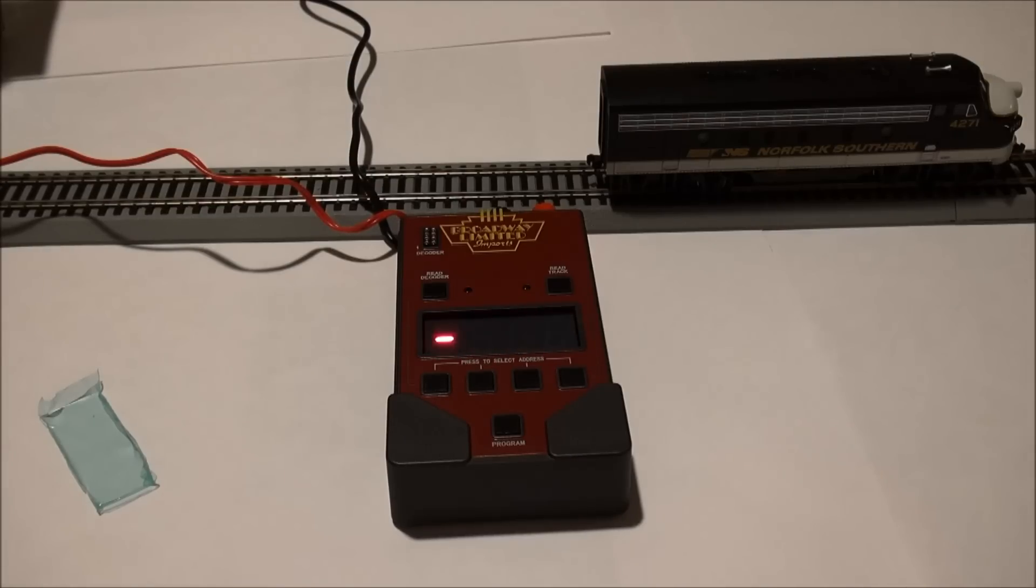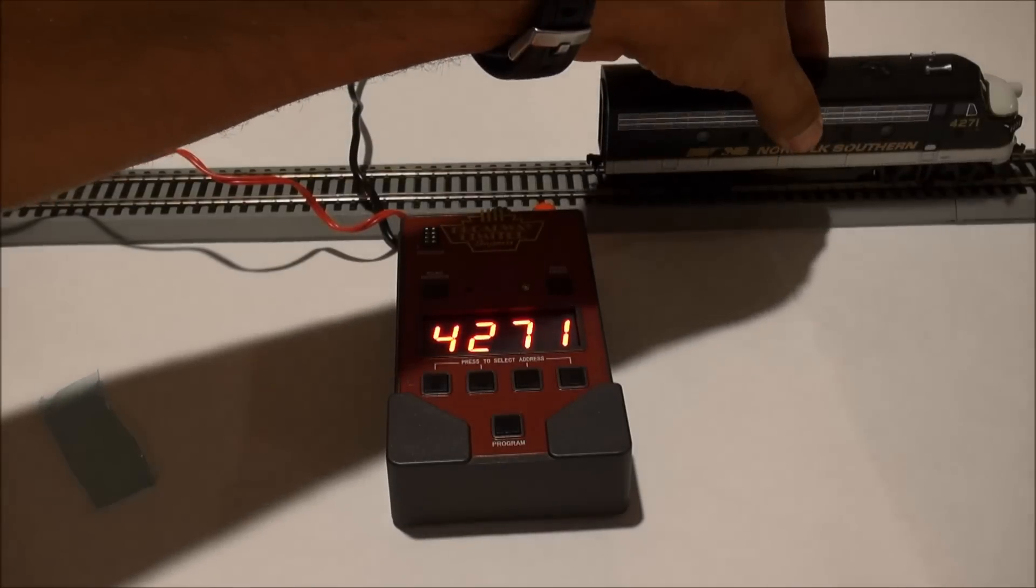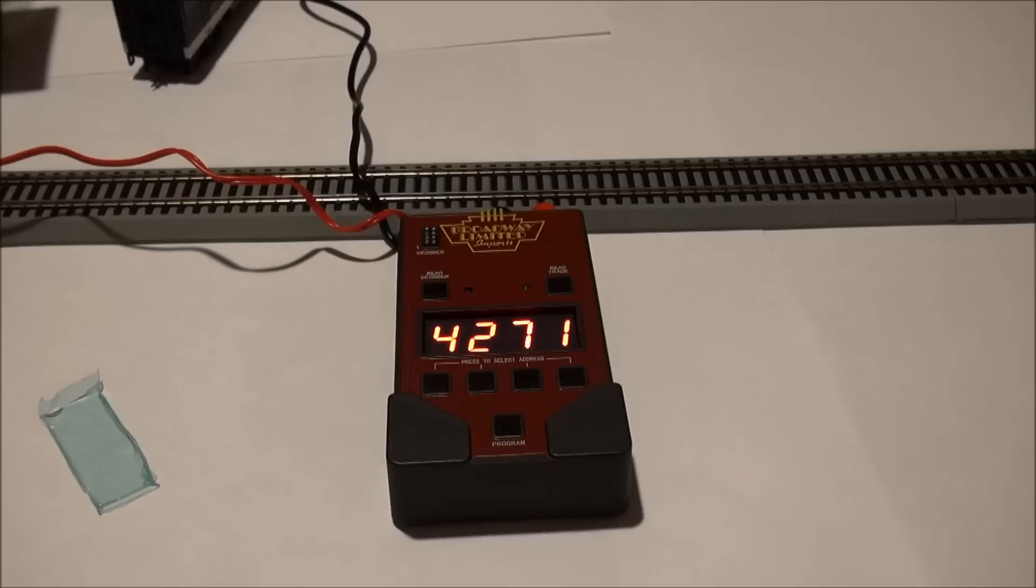But it says done, so I can always hit this Read Track button again and see if it still comes up 3 or if it comes up 4271. That's a way to check it. And it's coming up 4271, so let's call it a success on programming this DCC Sound Value, which is a SoundTraxx item.